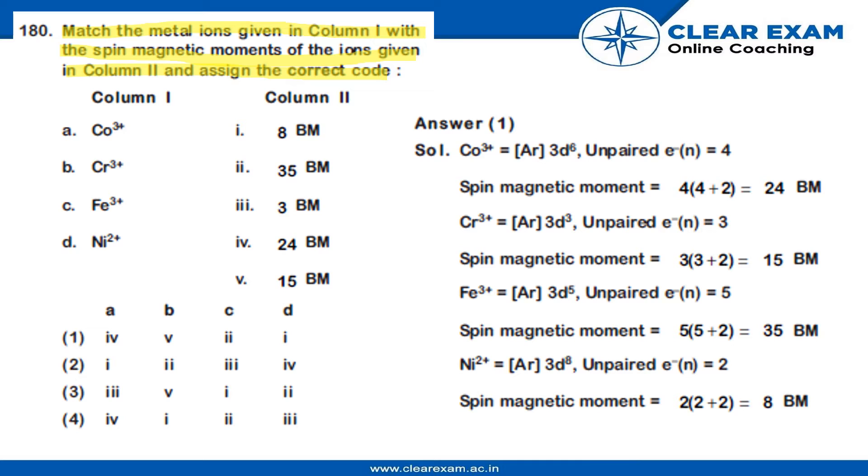First, we are given CO3+. So, writing the configuration of CO3+, we have Ar 3d6 giving us unpaired electrons as 4. Now, the spin magnetic moment is 4 into 4 plus 2, that will give you 24 BM. Now, 24 BM is option 4.